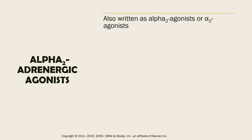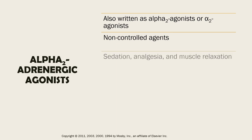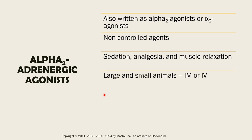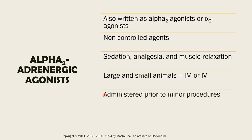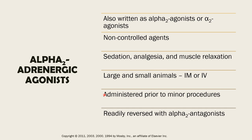The alpha-2 adrenergic agonists can also be called alpha-2 agonists. They are considered to be non-controlled substances or agents, and they can cause sedation, analgesia, and muscle relaxation. They can be used in large animals and small animals via IM or IV. We can administer alpha-2 agonists prior to minor procedures, either exclusively for sedation or mixed with an opioid. Their effects are reversible because they have reversal agents called alpha-2 antagonists. The alpha-2 adrenergic agonists are used a lot in veterinary medicine.